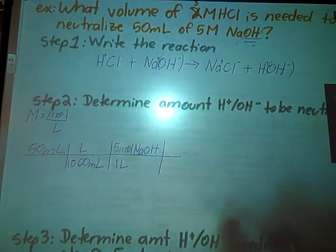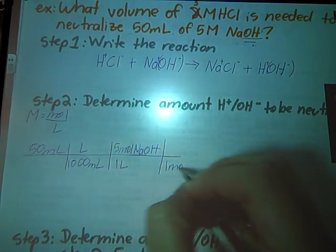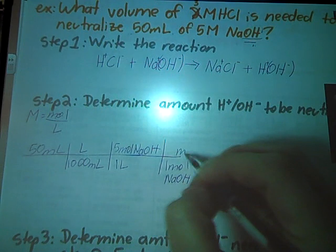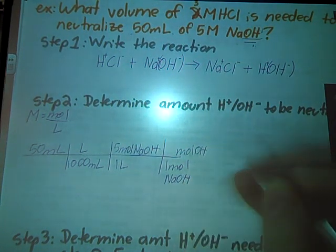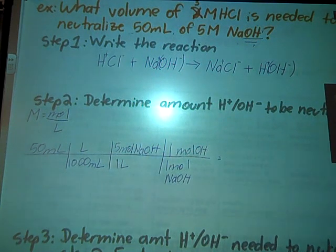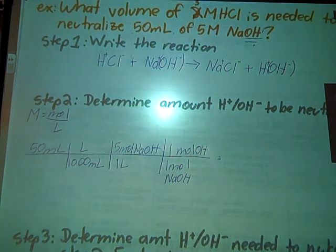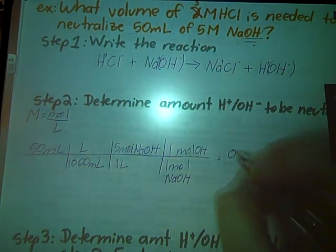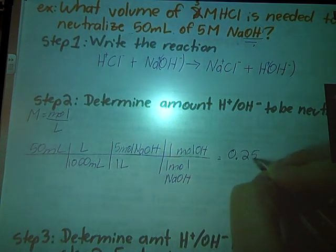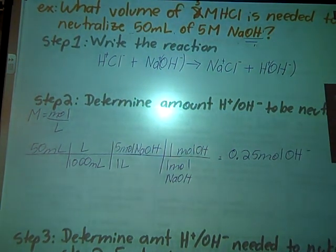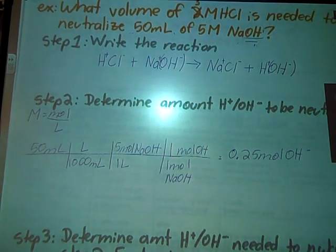We have to look at this molecule and say per one mole of sodium hydroxide, how many moles of OH do I have? In this one, it's one. Nice and simple. You're going to multiply all the way across the top, divide by all the way across the bottom. And we end up finding out that we have 0.25 moles of OH minus floating around in that solution that needs to be neutralized.